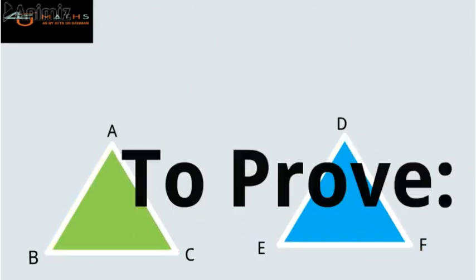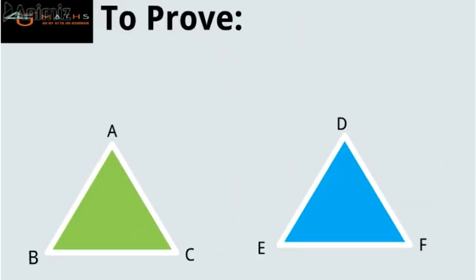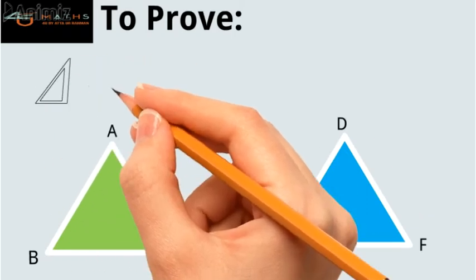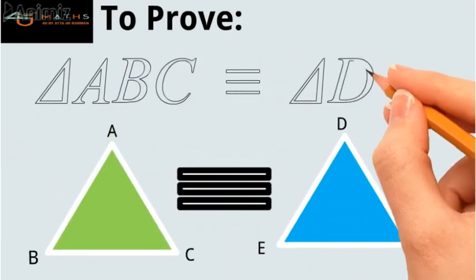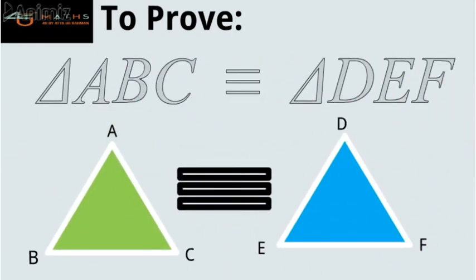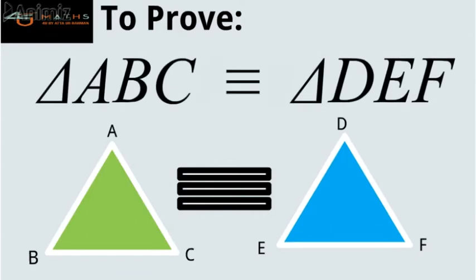To prove: we are required to prove that triangle ABC is congruent to triangle DEF.